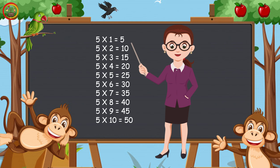Let's repeat. 5 times 1 is 5. 5 times 2 is 10. 5 times 3 is 15. 5 times 4 is 20. 5 times 5 is 25.